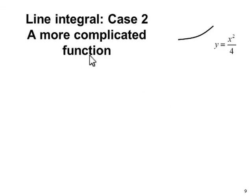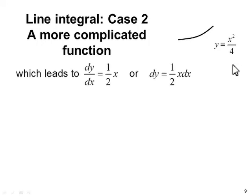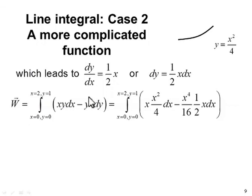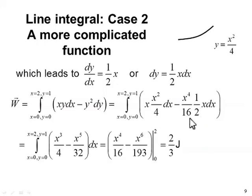Now for a slightly more complicated parabolic path. We have y is equal to x² over 4. Taking the derivative with respect to x, we find that dy is equal to 1/2 x*dx. We make the substitutions and end up with two integrals. We chose here to convert everything into x. And at this point, we've got a single variable integral. Single variable limits x equals 0 to x equals 2. And you guys already know how to do all of this. The integral over this path is 2/3 joules.